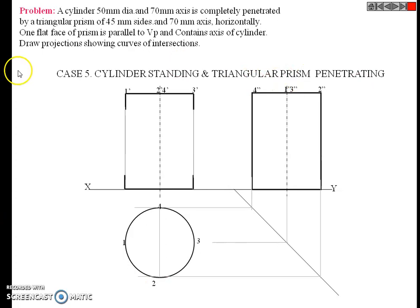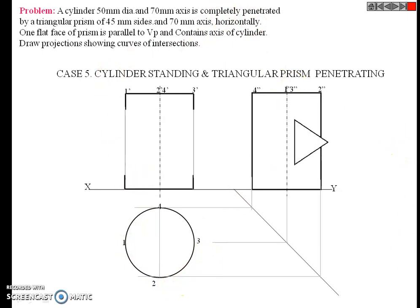For numbering and Step 1 summary: take the first solid and draw the top view of the first solid, then the front view of the first solid, then the side view of the first solid.